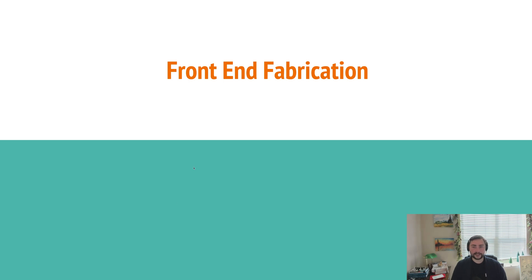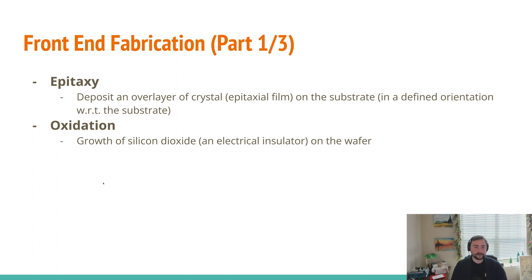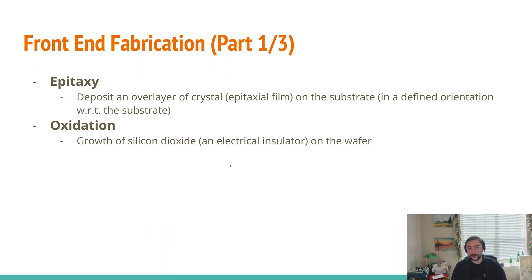We pass the silicon wafers to our front-end fabrication steps, which generally starts out with things like epitaxy and oxidation — two of the very early steps in fabrication. With epitaxy, we're depositing an overlayer of crystal, often referred to as an epitaxial film, on our substrate in a defined orientation. With oxidation, we're growing silicon dioxide — SiO2 — on our wafer, because it's going to act as the electrical insulator that we want.